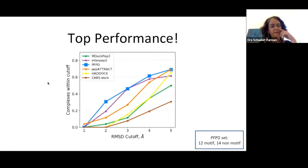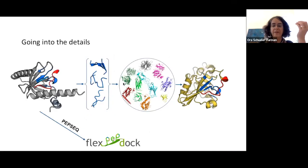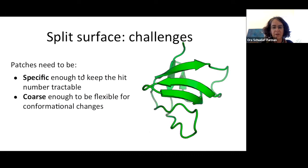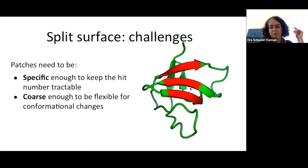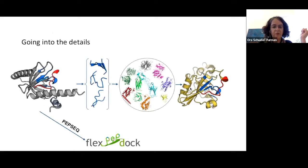This is called Patch Motif Alignment — PatchMan. We go over each surface residue and identify a local patch including nearby residues. These local motifs are searched in a dataset of protein structures including both interfaces and monomers. We find matching motifs and extract a template for the peptide as a starting point for docking, replacing the sequence back to what we had before. This protocol performs even better than PiperFlexPepDock.